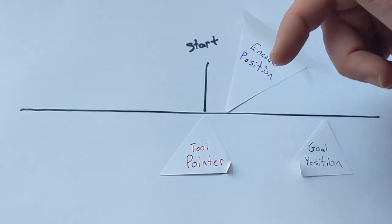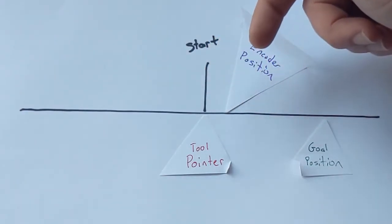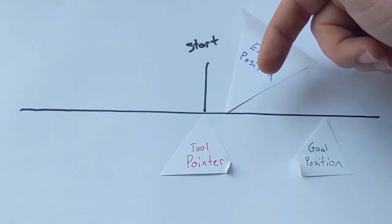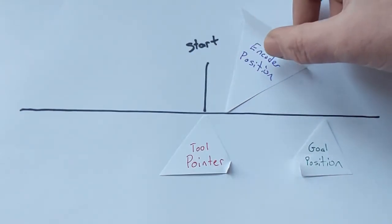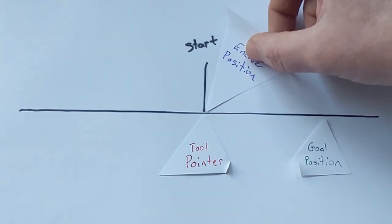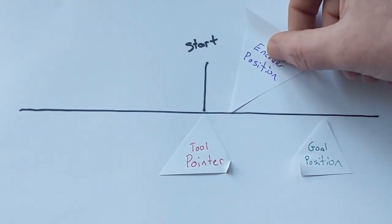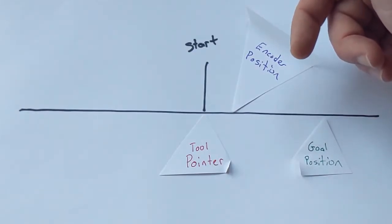And at some point we've calculated a step size for a number of encoder ticks to equal one stepper step. So nothing happens until the encoder moves one of those units and that unit is determined by the pitch that you set.